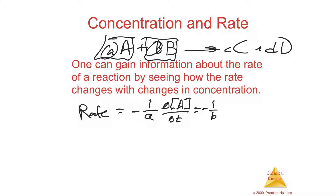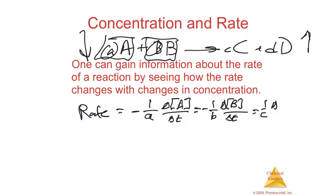You do the same thing for B: 1 over the coefficient of B times the change in concentration of B over change in time. For C and D, which are being produced, it's not going to be negative. So it's 1 over C times the change in concentration of C per time, and the same for D — delta D concentration per unit of time. That is the basic rate.